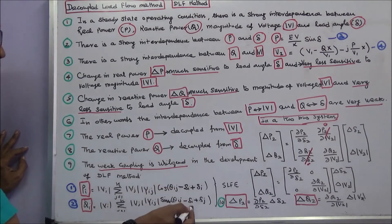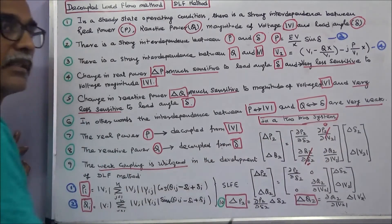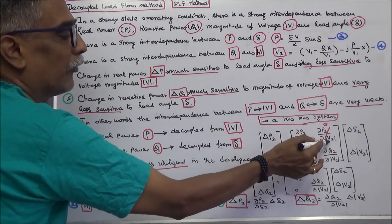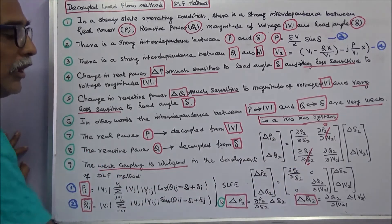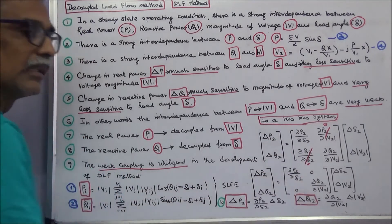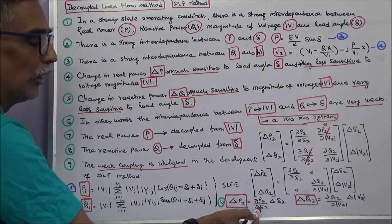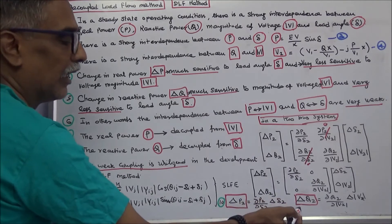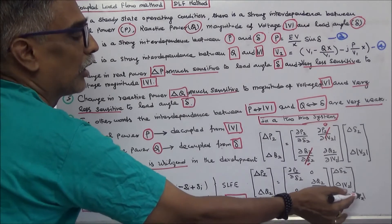Here, equations 1 and 2 are called static load flow equations. Consider a two-bus system. This is the Jacobian matrix. Here, del P2 by del modulus of V2 is 0. Del Q2 by del delta is 0. Therefore, this is the Jacobian matrix. Change in P2 equals del P2 by del delta into change in delta 2. Change in Q2 equals del Q2 by del modulus of V2 into change in modulus of V2.